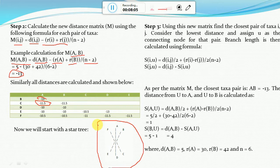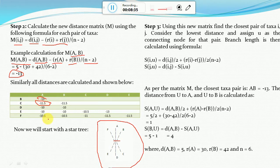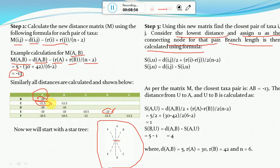We start with a trivial tree where all species are equidistant from a single parent node. Step three: using the new matrix M, find the closest pair of taxa — the two taxa with the least or lowest distance value. Looking at the matrix, the lowest value is −13, occurring for pairs A,B and D,E. We will focus on A and B in this example. The lowest distance pair is identified and a connecting node U is assigned to that pair.